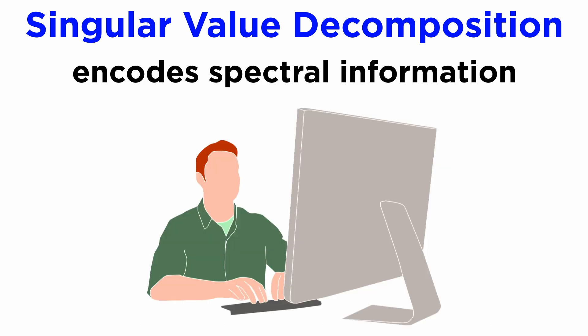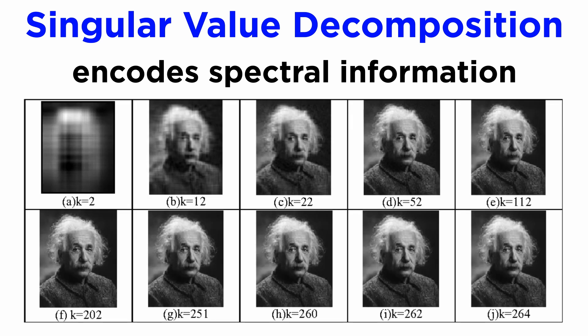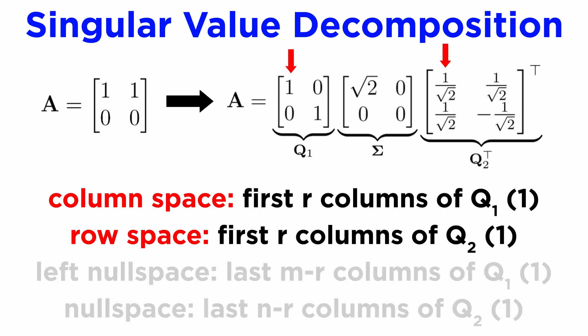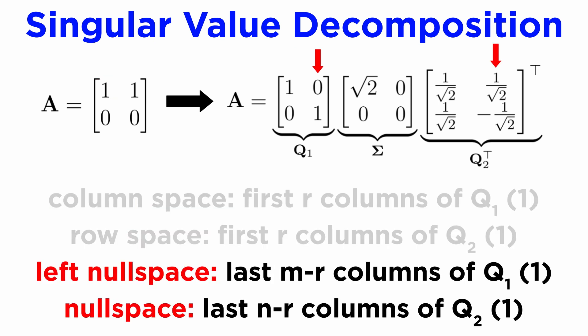The singular value decomposition has some unexpected applications across statistics and computer science, because it neatly encodes matrix A's spectral information, which is a fancy term for anything we can infer from the eigenvectors and eigenvalues. In fact, we can directly read off the spans of the four fundamental subspaces of A from its singular value decomposition. The column space and the row space of A are spanned by the first R columns of Q1 and Q2 respectively, where R is the rank of A, which itself is the number of non-zero singular values. The left null space and null space of A will be the remaining columns of Q1 and Q2 respectively, and all of these will be orthonormal bases.